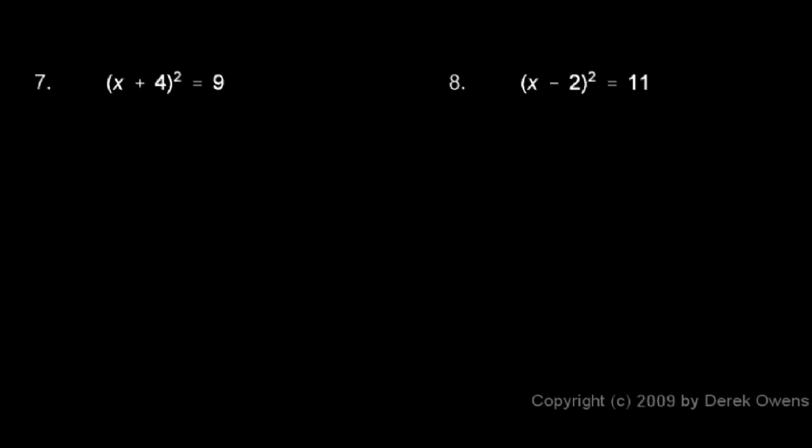And this is okay. I can still solve this by taking a square root. If I take the square root of the left side, it will be the square root of x plus 4 squared. And the right side is the square root of 9. This step typically you would skip. Just remember that the square root of anything squared is just that thing. So the square root of x plus 4 squared is just x plus 4.